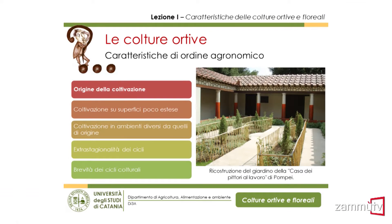Altro aspetto molto importante sono le caratteristiche agronomiche. La prima è quella dell'origine del nome: si chiamano 'ortive' perché il loro nome deriva dall'ortus romano, un piccolo spazio vicino all'abitazione. I romani coltivavano anche piante da frutto e da fiore, però il nome 'ortive' in italiano è stato assegnato solo a questo gruppo di piante, che sono fondamentali per la nostra alimentazione: pensate alla lattuga, al pomodoro, al broccolo.